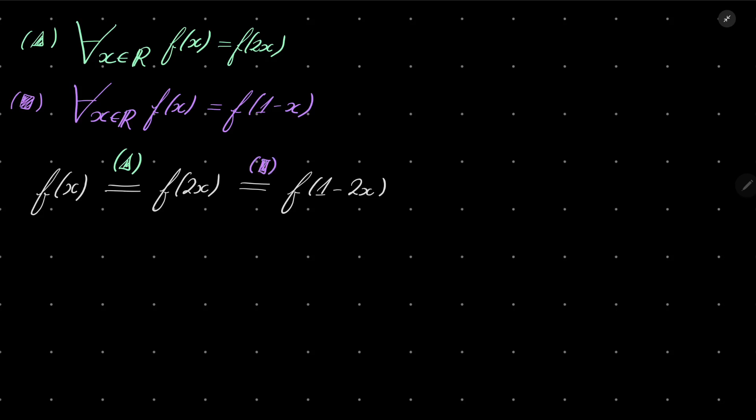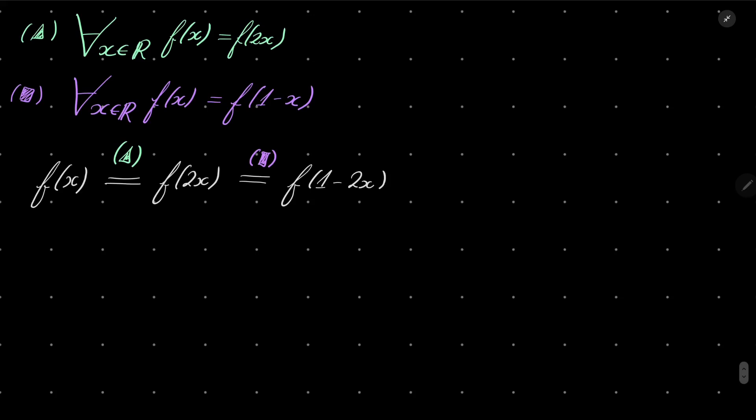Very nice, but what is f(1-2x)? We can actually halve this argument, so it's the same as f(1/2 - x). Why? Again, because of our condition triangle. Here we have twice the argument compared to that.